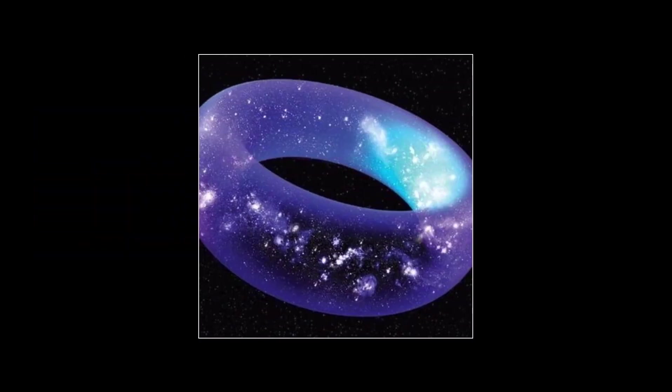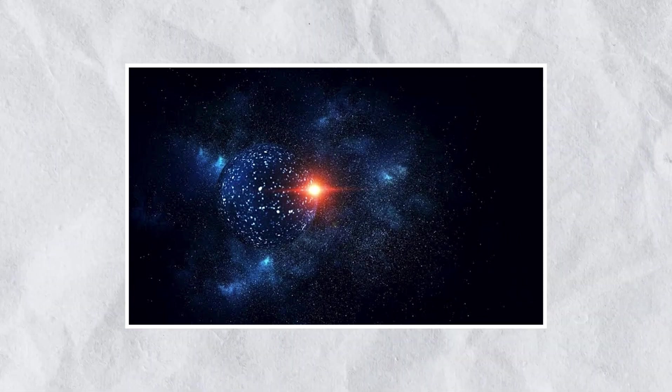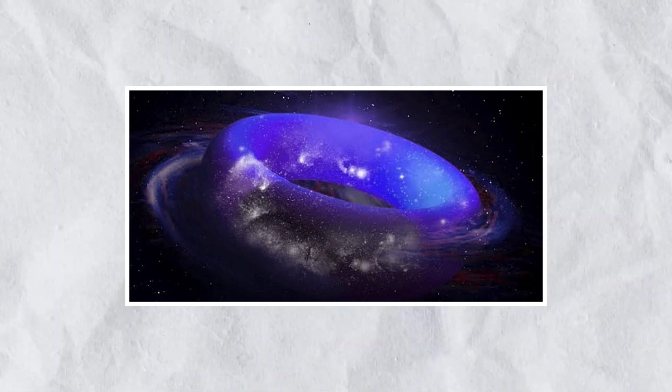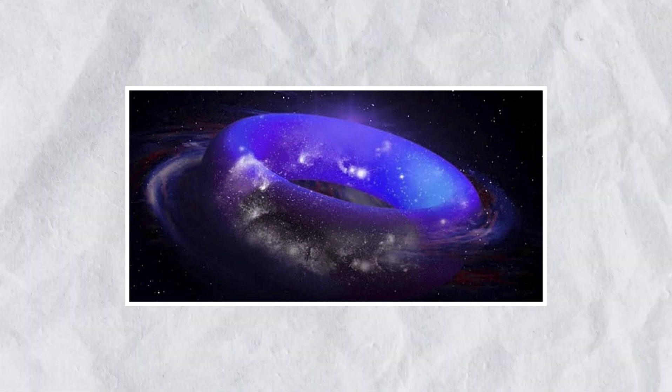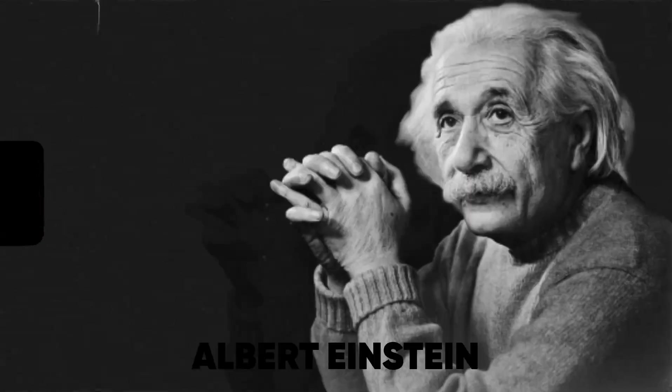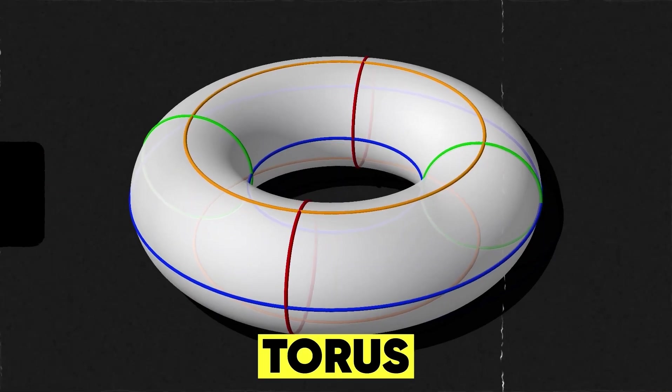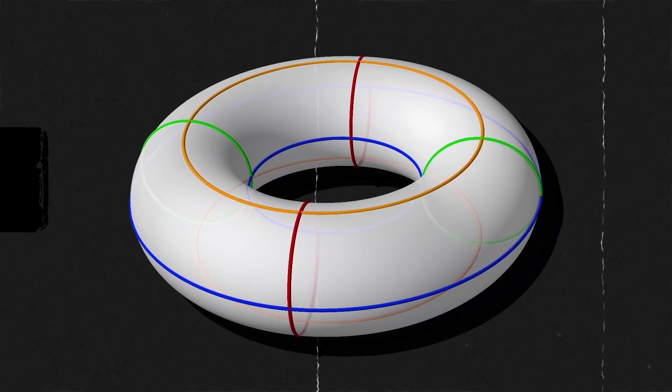Curious how the universe ends up to be a donut? Compared to the infinity theory, this theory proposes that there is a massive possibility that there is no outside to the universe at all. This theory was initially proposed by Albert Einstein and suggests that the universe could be shaped like a torus or, as you might be more familiar with the name, a donut.